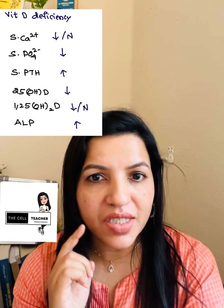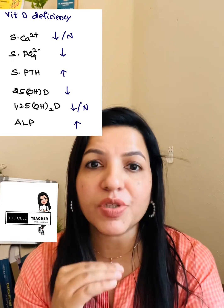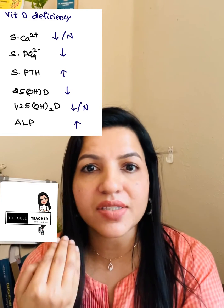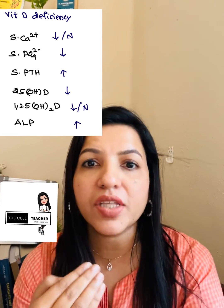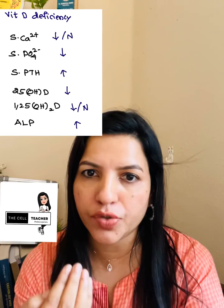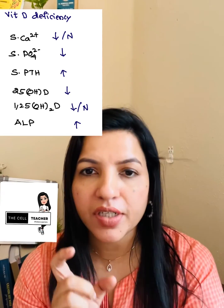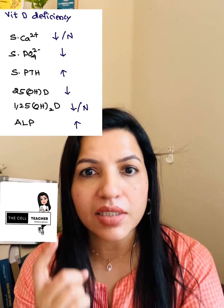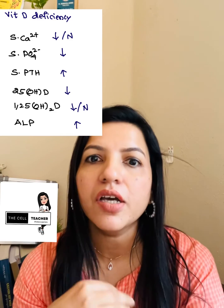Serum phosphate is always decreased, because even if there is secondary hyperparathyroidism, parathyroid hormone is phosphaturic. The serum parathyroid hormone is definitely increased.